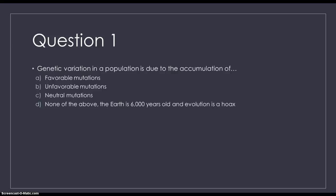Very simple question, it's just a review. So genetic variation in a population is due to the accumulation of: A, favorable mutations, B, unfavorable mutations, C, neutral mutations, or D, none of the above, the earth is 6,000 years old and evolution is a hoax.